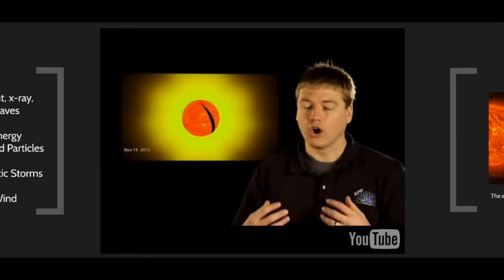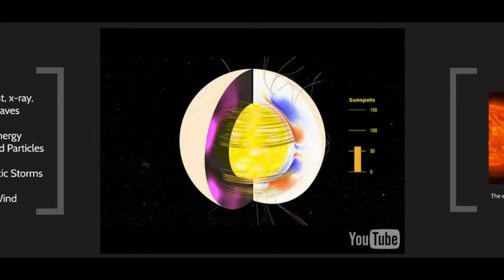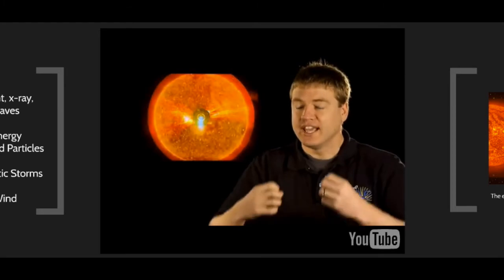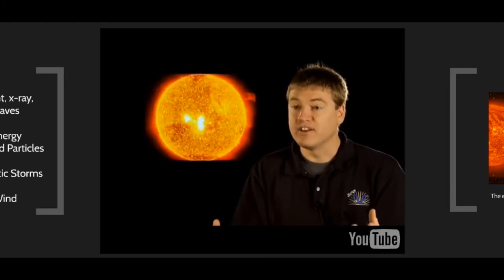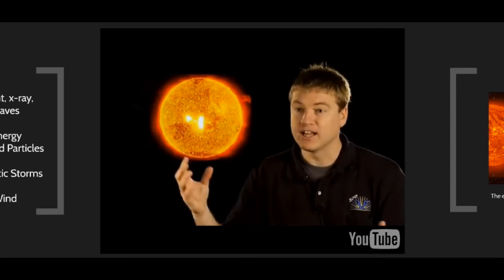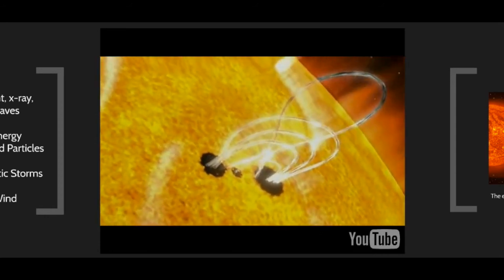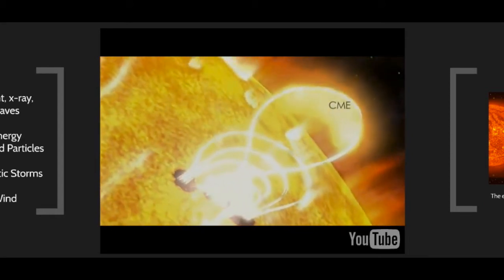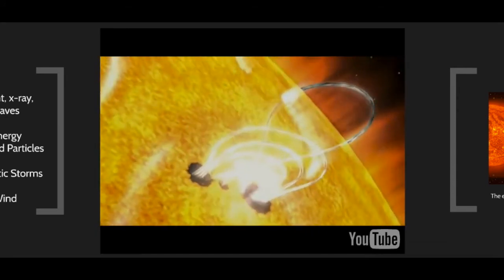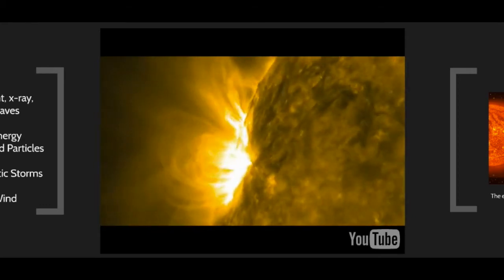Solar flares and CMEs are driven by magnetic reconnection, where oppositely directed magnetic fields annihilate. Since you cannot simply destroy energy, it must be converted into plasma motions, heating of plasma, and increased light output. A CME is when material and magnetic field lines are thrown away from the Sun, whereas a flare is the close-to-the-surface phenomenon where twisting and snapping occurs, producing heat and kinetic energy.